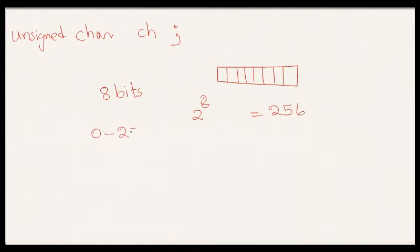That means 0 to 255. If we include 0, then it is 255. That is why an unsigned char, which is 8 bit data type, or the system allocates 8 bits for unsigned char. And in that 8 bits, you can store any value from 0 to 255.